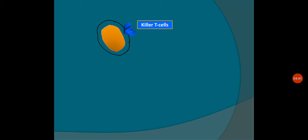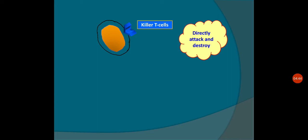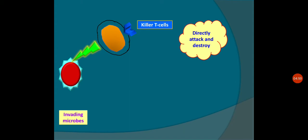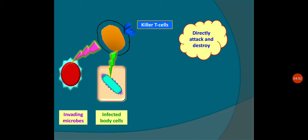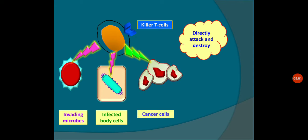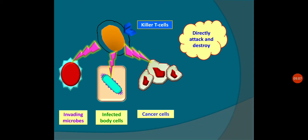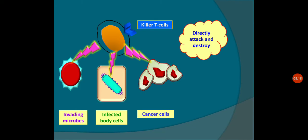The second type is killer T-cell. Killer T-cells directly attack and destroy. When microbes try to enter the system, killer T-cells identify the infected body cells — whether they are cancer cells or any other type — and directly deal with the pathogen, bacteria, virus, or cancer cells. That is why they are called killer T-cells; they directly deal with the antigen.